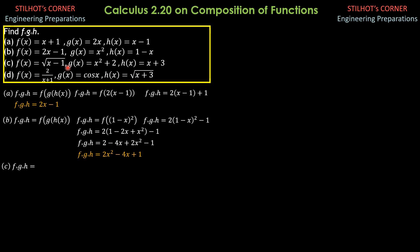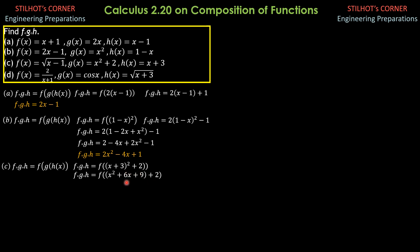For part c, f of g of h is equal to f of g of h of x. Therefore it is equal to f of quantity (x plus 3) squared plus 2. Substituting (x plus 3) squared plus 2 into this function, f of g of h is equal to the square root of this value, then minus 1. So f of g of h is f of (x squared plus 6x plus 9 plus 2), simplifying to f of (x squared plus 6x plus 11). Then x squared plus 6x plus 11 is substituted into x in the radical. So f of g of h is square root of (x squared plus 6x plus 11) minus 1, which simplifies to square root of (x squared plus 6x plus 10).